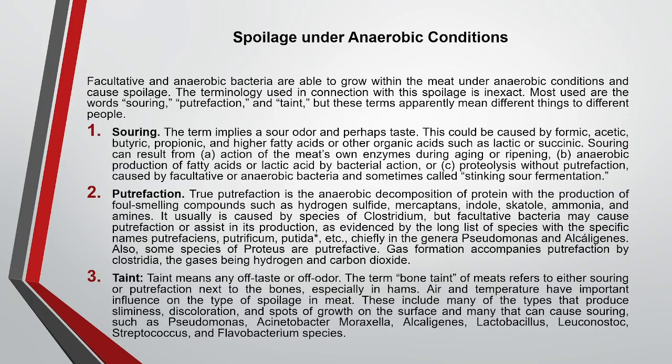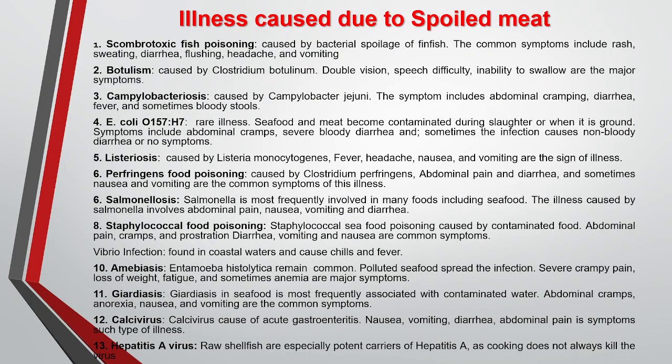Putrefaction is the anaerobic decomposition of protein. It results in the production of compounds such as hydrogen sulfide, mercaptans, indole, skatole, ammonia, and amines, all of which give off-flavor or rancidity to the product. Taint refers to off-flavor or off-odor resulting from these anaerobic processes.